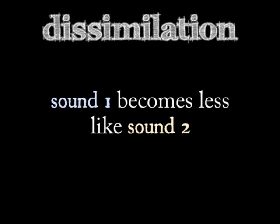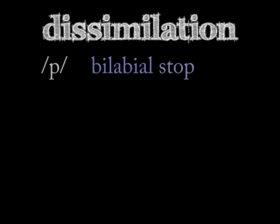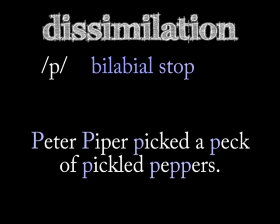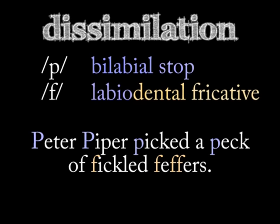There's an opposing change known as dissimilation. Two sounds are involved here too, but one becomes less like the other. The dissimilating phoneme loses one or more of the features it shares with another nearby phoneme. The English phoneme P is a voiceless bilabial stop. If you say 'Peter Piper picked a peck of pickled peppers' as fast as you can, chances are you dissimilate one or more P's by pronouncing them as F — becoming less like the surrounding P's by turning from a stop into a fricative.